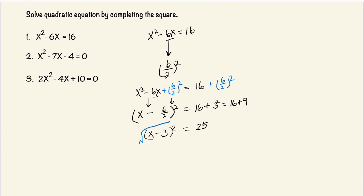Now we're going to take the square root on both sides. This will cancel out and we get x minus 3 is equal to plus or minus — don't forget that — 5. The reason we use plus or minus is that when you take the square root of a constant, you get two possible solutions: the positive and the negative.